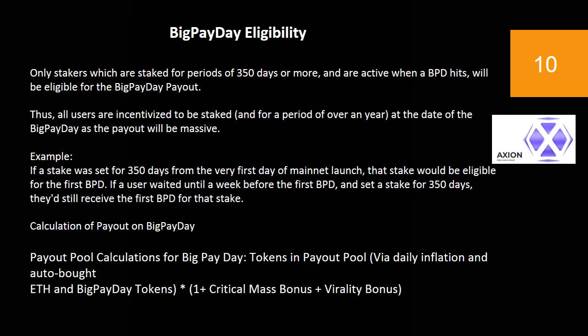Big Pay Day eligibility. Only stakers which are staked for periods of 350 days or more, and are active when a BPD hits, will be eligible for the Big Pay Day payout. Thus, all users are incentivized to be staked for a period of over a year at the date of their Big Pay Day, as the payout will be massive. Example: if a stake was set for 350 days from the very first day of mainnet launch, that stake would be eligible for the first BPD. If a user waited until a week before the first BPD and set a stake for 350 days, they'd still receive the first BPD for that stake.